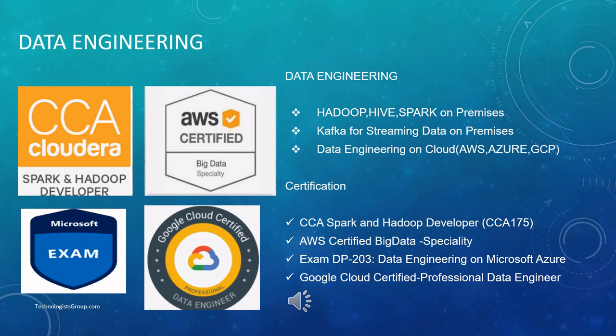Companies are planning to move their on-premise big data systems to cloud, so there is a huge demand for cloud data engineers. For certifications: if you want to learn Spark and Hadoop, you can start with the Cloudera Spark and Hadoop Developer certification. For cloud data engineering, the first one is AWS Certified Big Data Specialty — using this you learn about AWS EMR for setting up big data systems and AWS Redshift as a data warehouse for storing structured data.